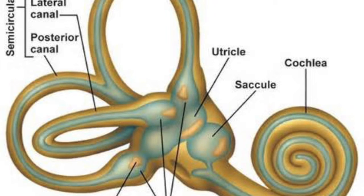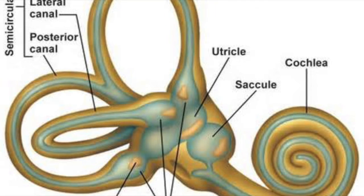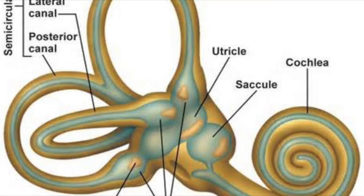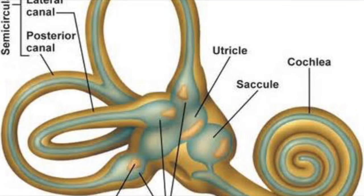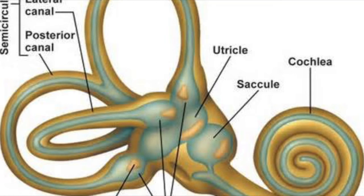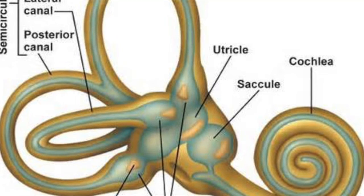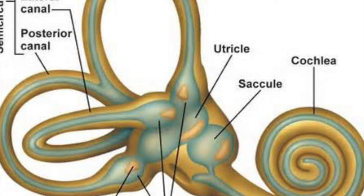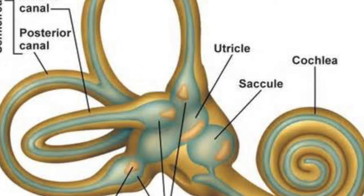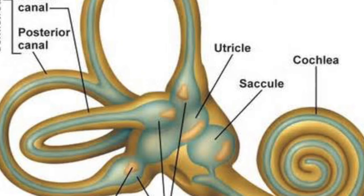There are three ampullae, and each ampulla has cristae, which are the end organs of the semicircular canals. The maculae is the end organ of the utricosaccular system. The endolymphatic sac is a drainage system for endolymph fluid to keep fluids drained for balance, and the ductus reuniens allows communication between the endolymphatic duct and the endolymphatic sac.